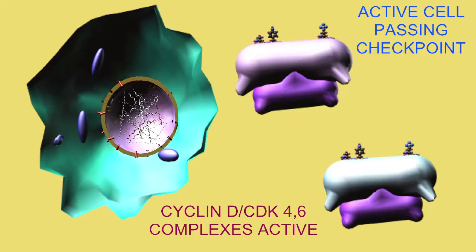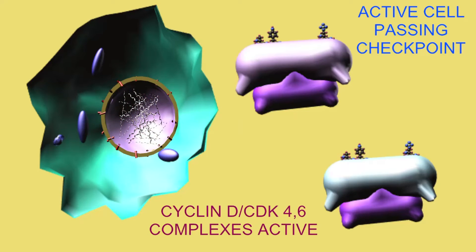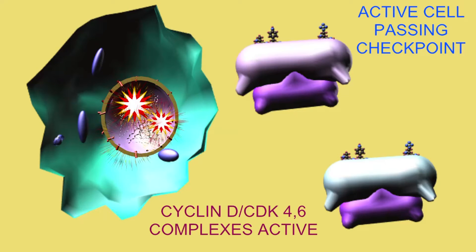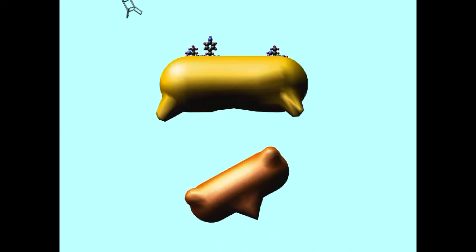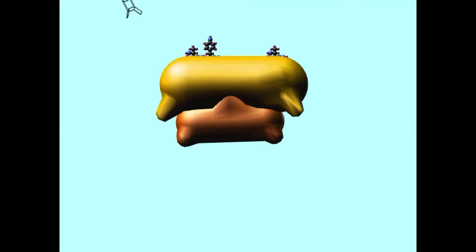In many cells, such as the cells of the breast, estrogen binding to the estrogen receptor promotes the production of cyclin D. Cyclin D binds to the cyclin-dependent kinases 4 and 6. They are appropriately phosphorylated, and this complex will promote the entry into G1.